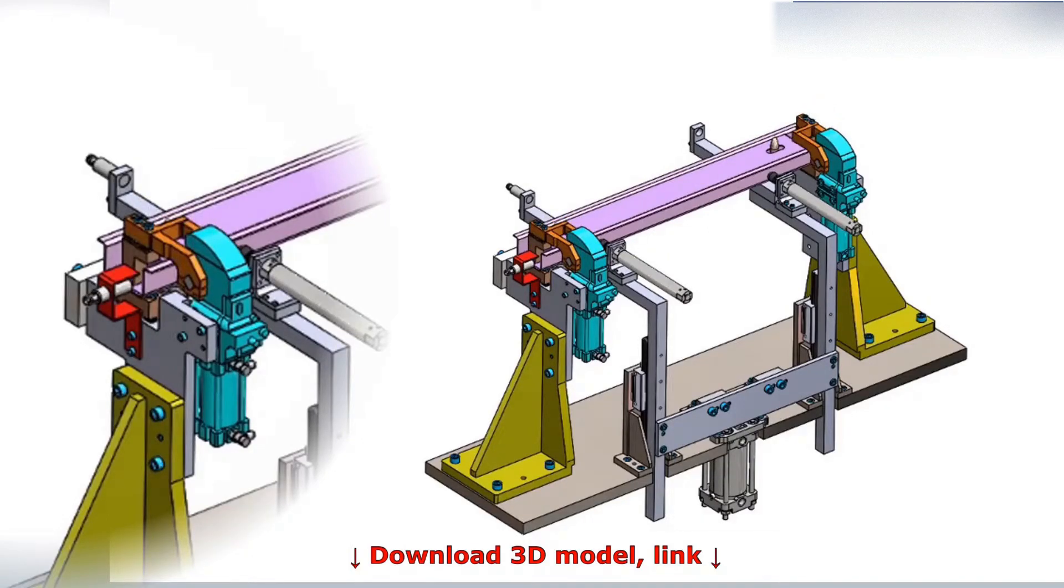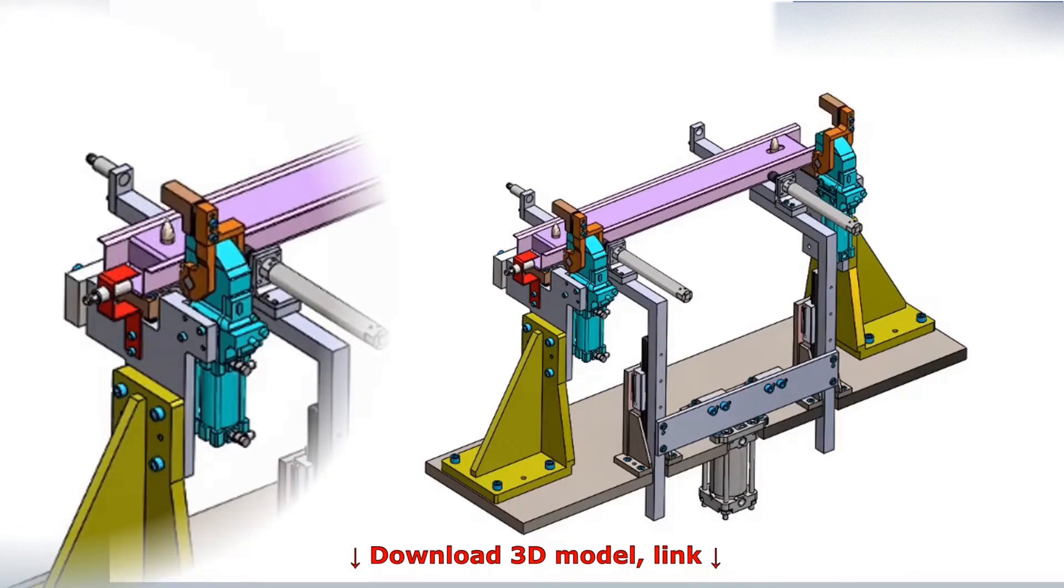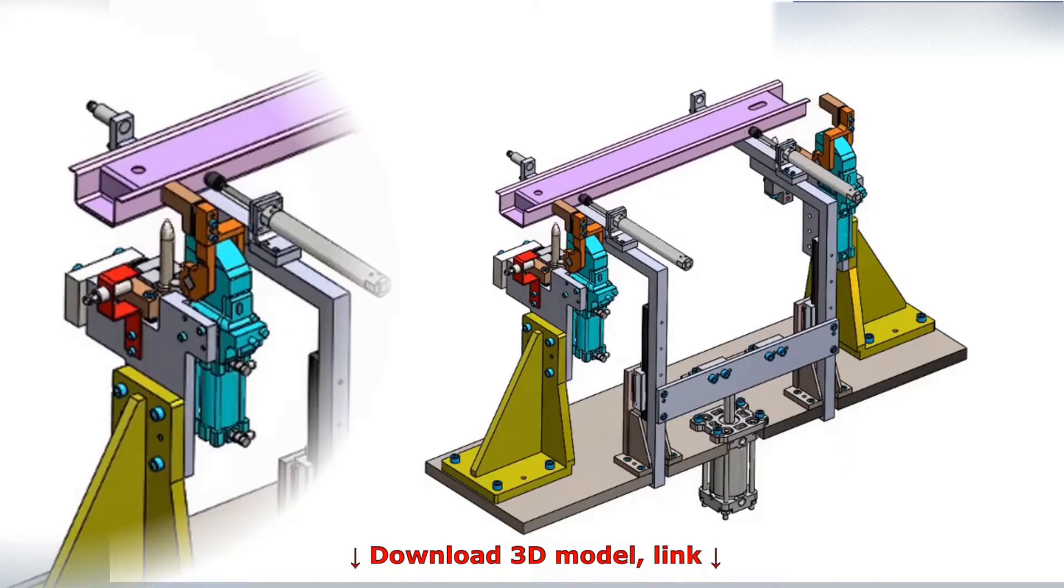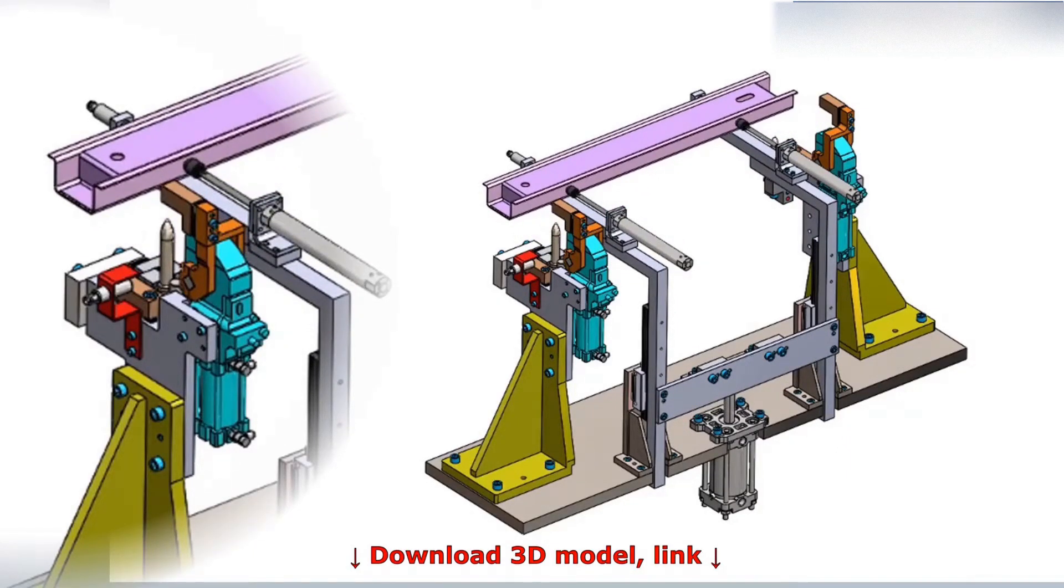After the welding is complete, the unloading mechanism first pushes the weldment up, and second, the mechanism pushes the weldment forward, freeing up the fixture to load new parts.